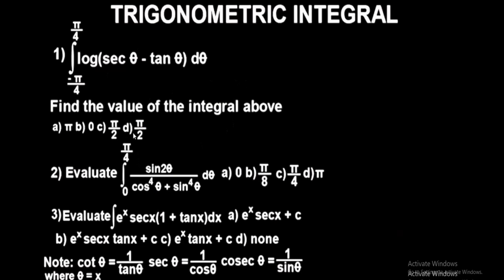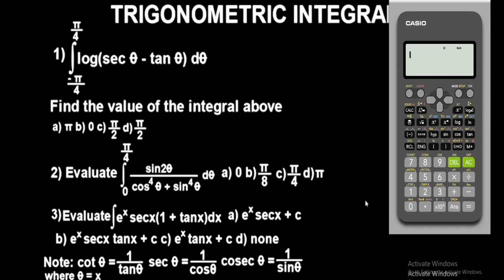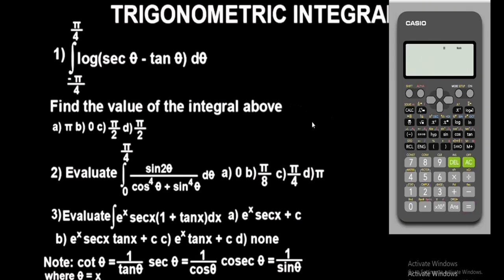Let's get the calculator and get started. This is the Casio fx-91ES Plus second edition scientific calculator. The very first thing you have to do — very very important — is to put it in default mode. To reset, press Shift button 9, then press 3, then press equals, then press equals again. Now we have the calculator reset.